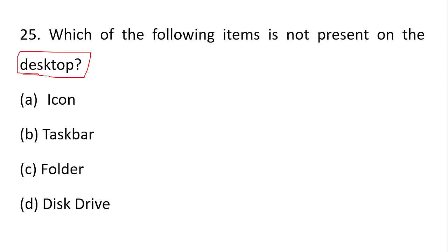Which of the following items is not present on the desktop? Desktop has a visual screen with wallpaper, icons (graphical representations), taskbar, and folders. Disk driver — Option D — disk driver (local disk C, D, E) is not present on the desktop.